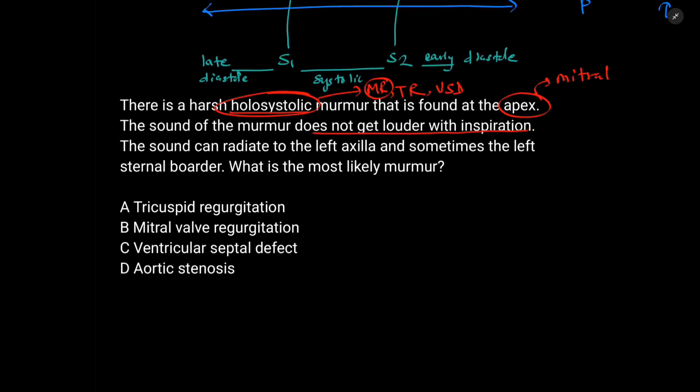Had it gotten louder with inspiration, we could say that it could be because of defect in either tricuspid valve or the pulmonic valve. But since it does not get louder with inspiration, we can say that it is not because of tricuspid regurgitation. And the sound can radiate to the left axilla and sometimes to the left sternal border. And this says that it is because of mitral regurgitation. And what is the most likely murmur? It is mitral valve regurgitation. Thank you.